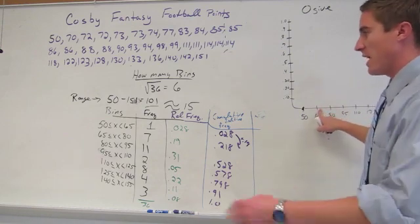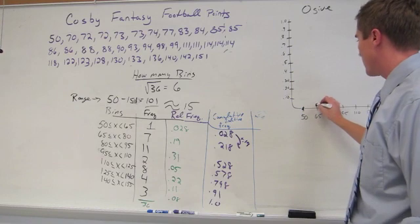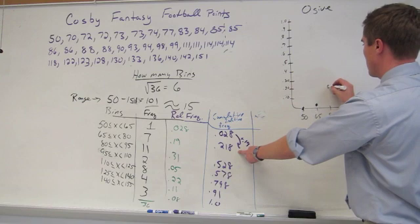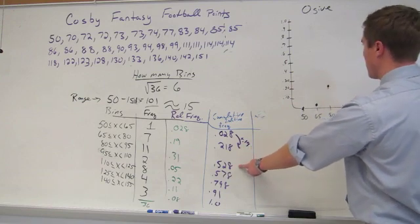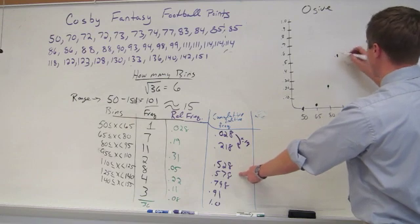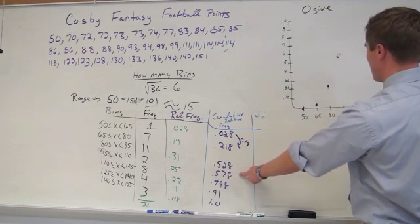Now at 65, how many are less than that? 0.028. So I put a dot. How many people below 80? And we see that the total is 0.218. 95, 0.528. Then we see 0.578. For the next one below 110.